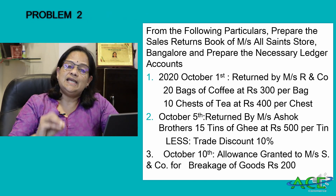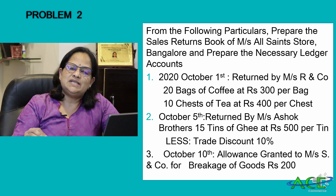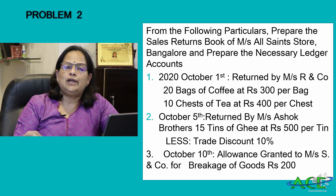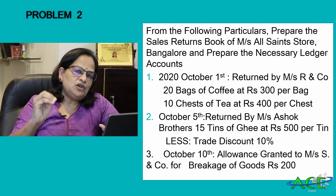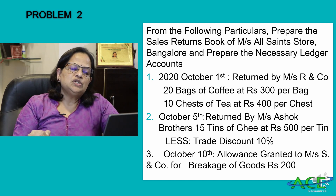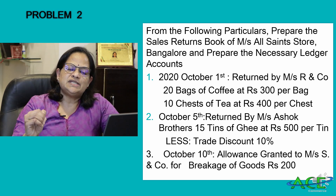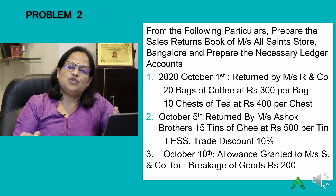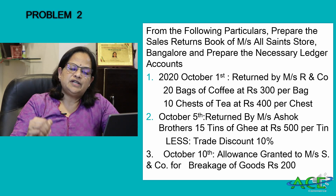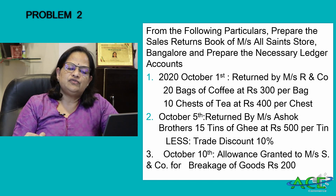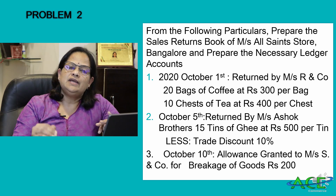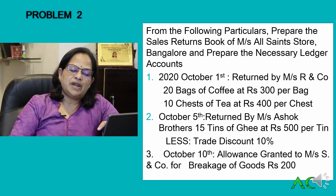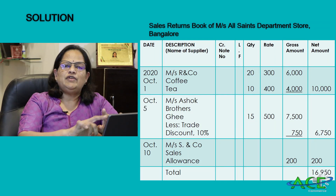Second problem: prepare the sales returns book of Mrs. All Saints Store, Bangalore, and the necessary ledger accounts. Transactions: October 1st — returned by Mrs. R and Company: 20 bags of coffee at ₹300 per bag and 10 chests of tea at ₹400 per chest. October 5th — returned by Mrs. Ashok Brothers: 15 tins of ghee at ₹500 each with 10% trade discount. October 10th — allowance granted to Mrs. SN Company for breakage of goods: ₹200.